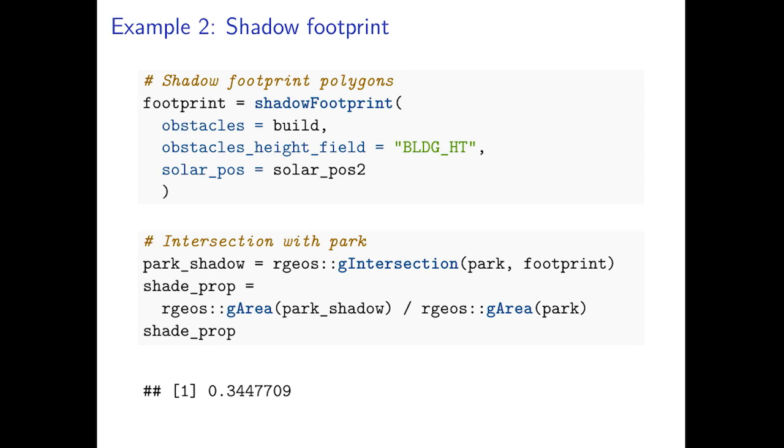Here we apply function shadowFootprint with similar inputs: the name of the obstacles layer the buildings, the name of the height field, and the new sun position we just calculated. The resulting object footprint is a polygonal layer. We can calculate for example its intersection area with the green park and then calculate the shaded park proportion, which in this case is 0.34.